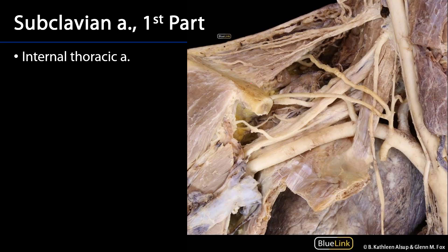Let's take a look at a subclavian artery in the root of the neck. The subclavian artery has three parts that are defined by their relationship to the anterior scalene muscle. The first part is everything medial to the edge of the anterior scalene muscle; the second part is anything behind that anterior scalene muscle; and the third part is anything lateral to the anterior scalene muscle out to the lateral margin of the first rib, where it then becomes the axillary artery.